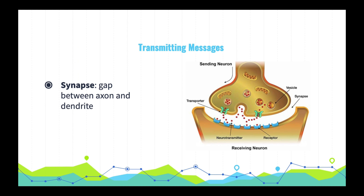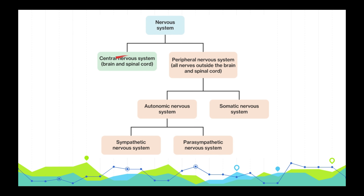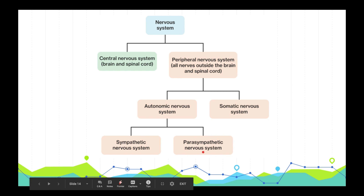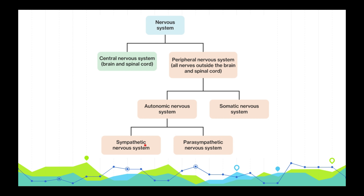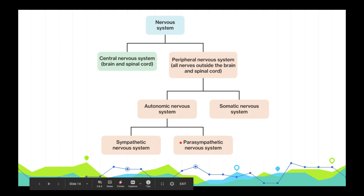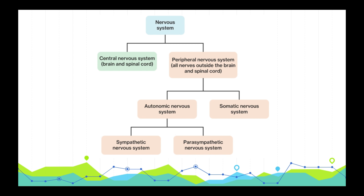At the top of the nervous system breakdown, we have the division between the central nervous system and the peripheral nervous system. The peripheral nervous system breaks down into the autonomic system and the somatic system. The somatic system controls our skeletal muscles. The autonomic system controls muscles of our internal organs — important for heartbeat and digestion. The autonomic system further divides into the sympathetic and parasympathetic systems. The sympathetic system expends energy; if you see a hungry bear and get scared, it accelerates your heartbeat and raises your blood pressure. The parasympathetic nervous system does the opposite — it conserves energy and calms you down.